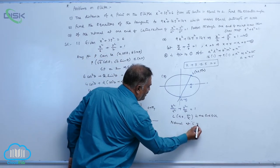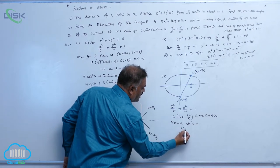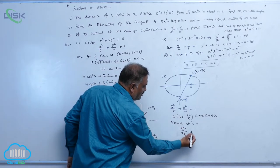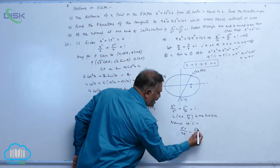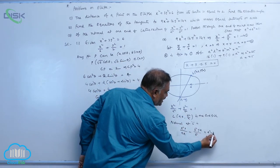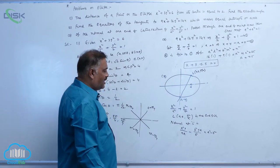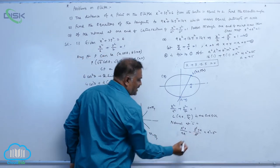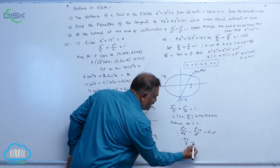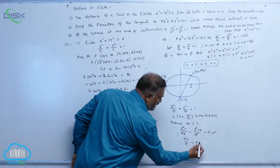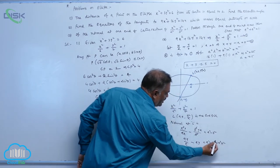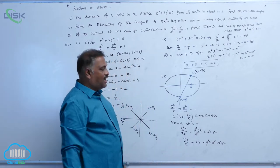First, let us write formula. That is a square x by x1. In place of x1, you write ae minus b square y by y1, that is b square by a is equal to a square minus b square. B square gets cancelled. When a gets cancelled, it is a x by e minus a y is equal to a square minus a square e square. A square gets cancelled.